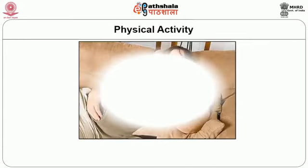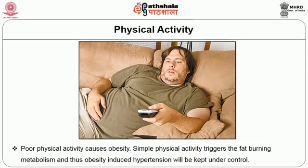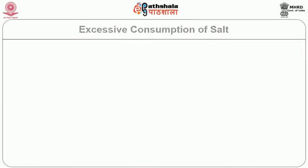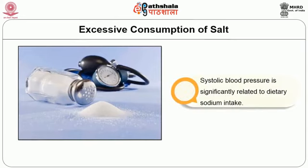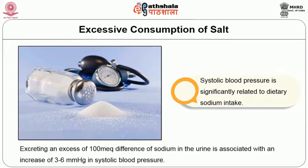Physical activity: poor physical activity causes obesity. Simple physical activity triggers the fat-burning metabolism and thus obesity-induced hypertension will be kept under control. Excessive consumption of salt: systolic blood pressure is significantly related to dietary sodium intake. Excreting an excess of 100 milliequivalents difference of sodium in the urine is associated with an increase of 3 to 6 mm Hg in systolic blood pressure.